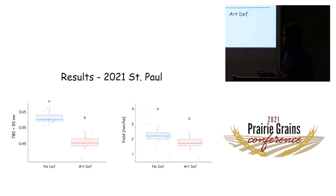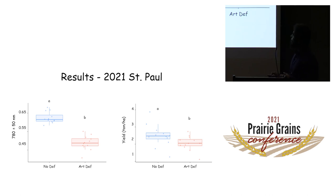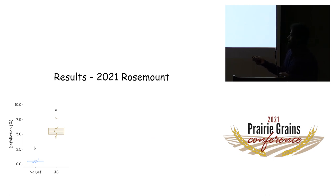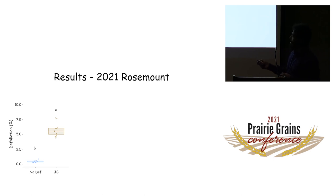For yield in St. Paul, as expected, artificial defoliation reduced overall yield. For Rosemount, we also included the Japanese beetle defoliation treatment. The graph shows defoliation levels: control plants were close to zero, while Japanese beetle defoliation averaged around 5%.